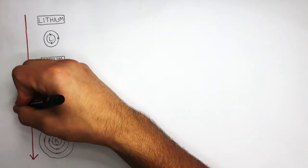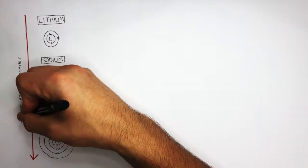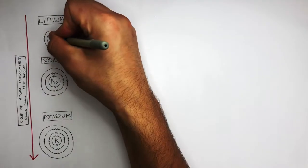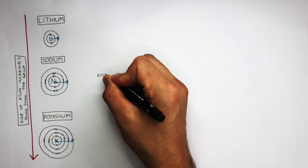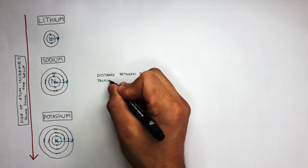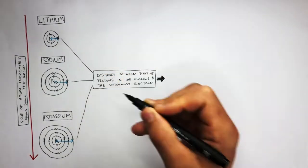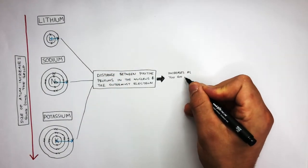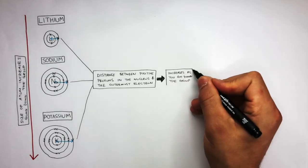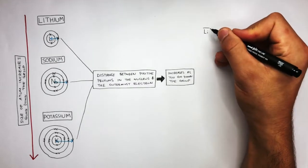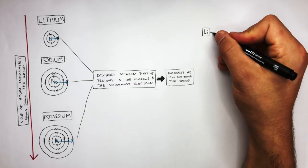From the diagrams you can see that the size of the atoms increase as you go down the group. Here I'm drawing blue lines to show the distance between the positive protons in the nucleus and the outermost electrons which are negative. It's very clear that the distance increases as you go down the group. These diagrams will now explain how the distance affects reactivity as you go down the group.